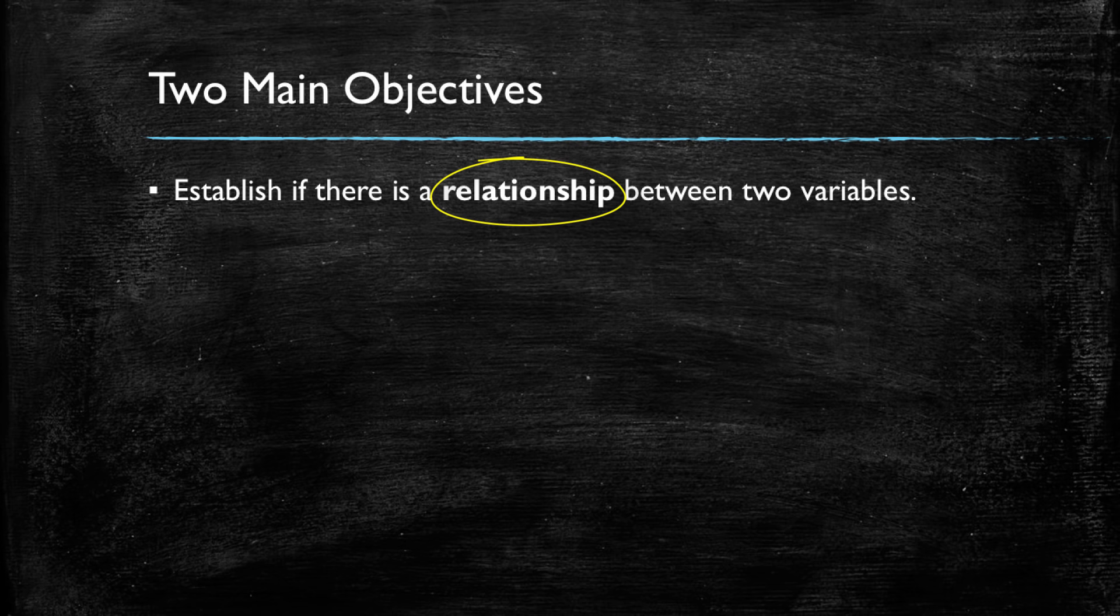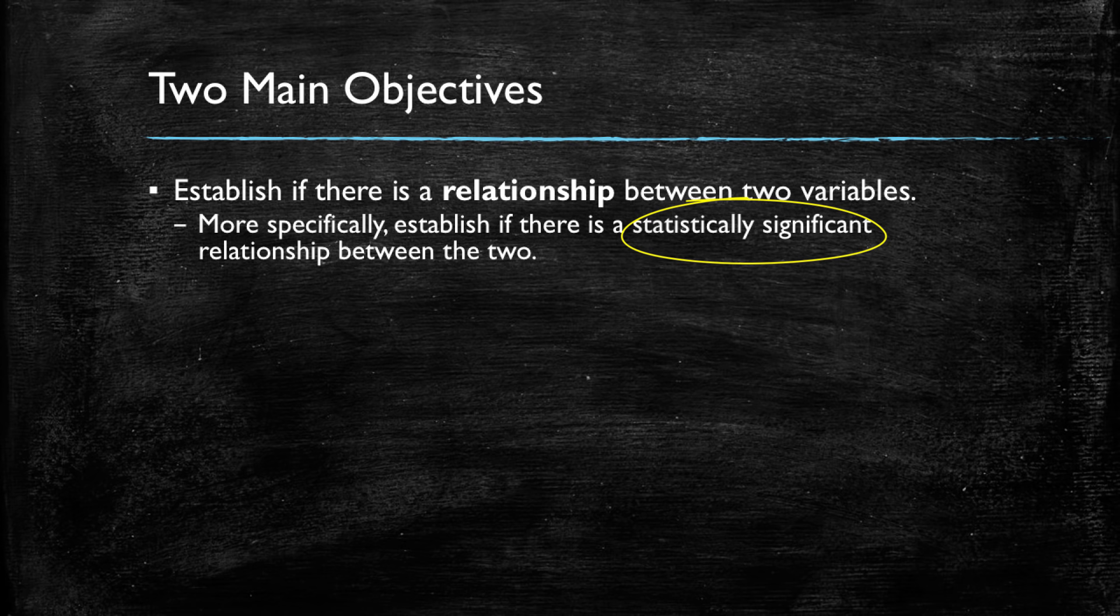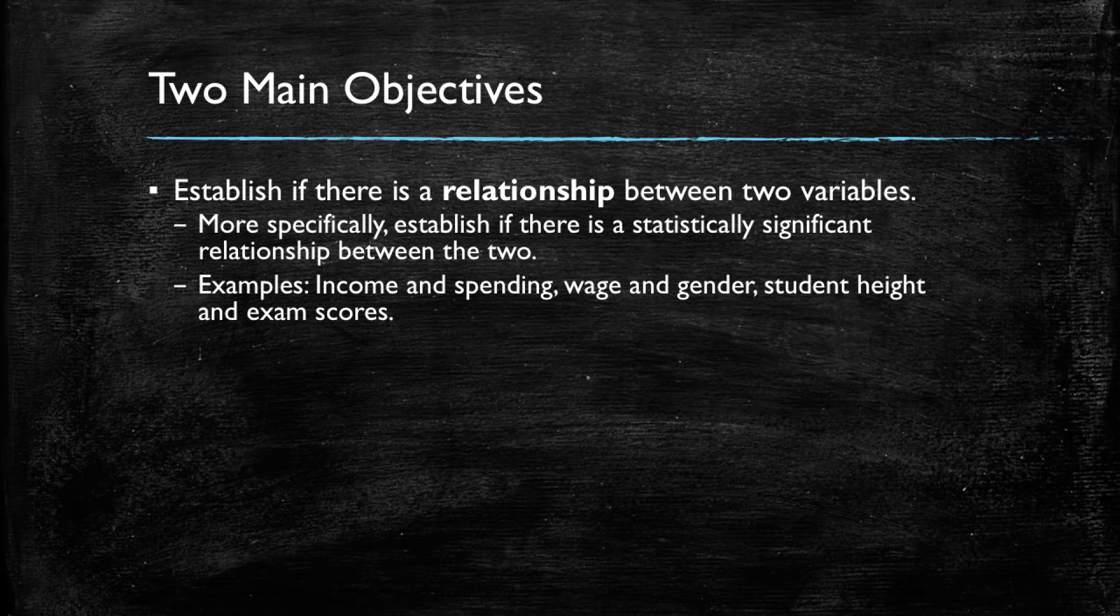More specifically, we're going to be talking about statistically significant relationships between the two variables, but we will get back to this later. Let's talk about some examples. On average, we expect that people or families that earn higher income will generally spend more of a given product. In this case, we're talking about a positive relationship between income and spending. We could also analyze and test if there's a relationship between wage and gender.